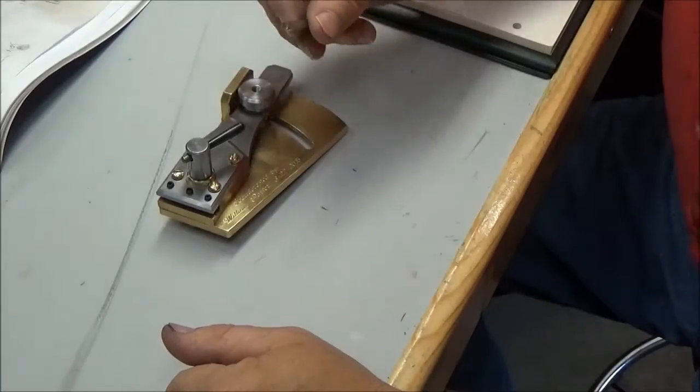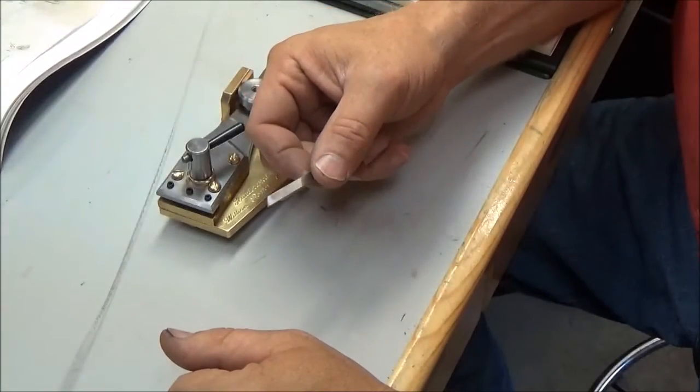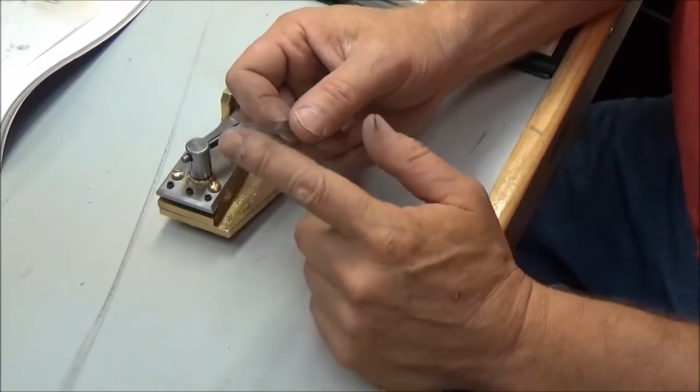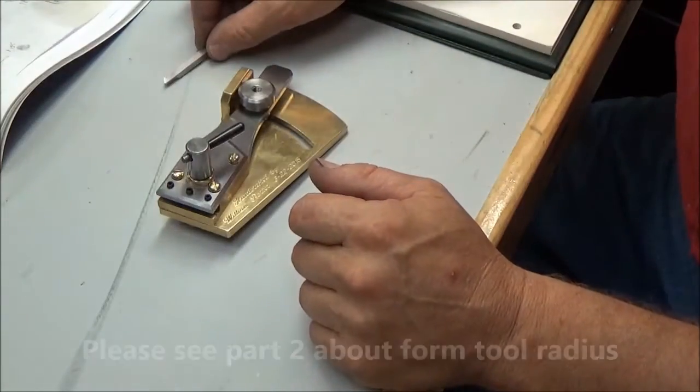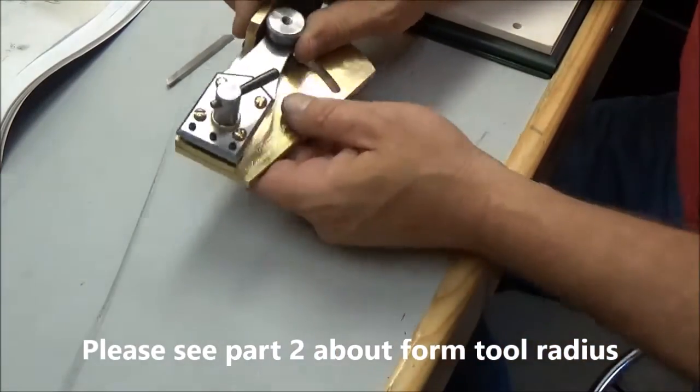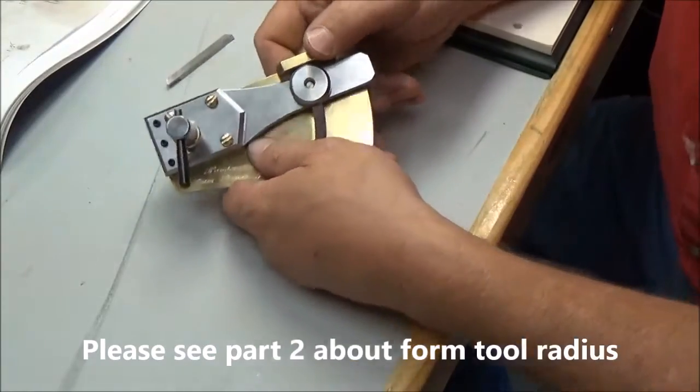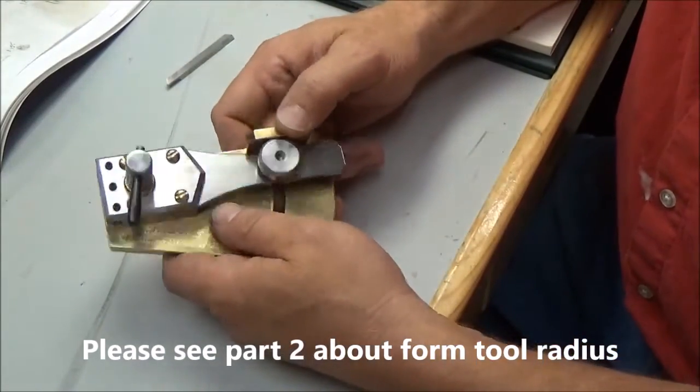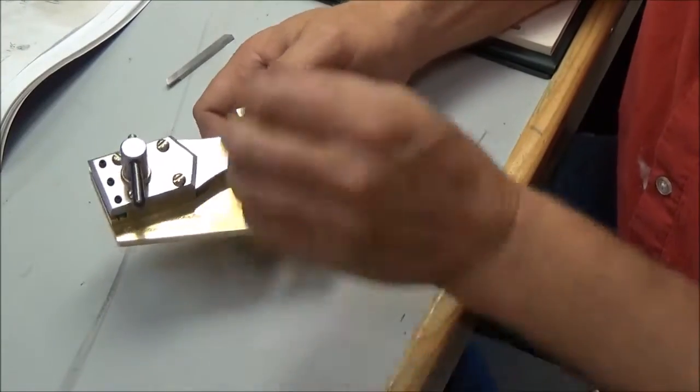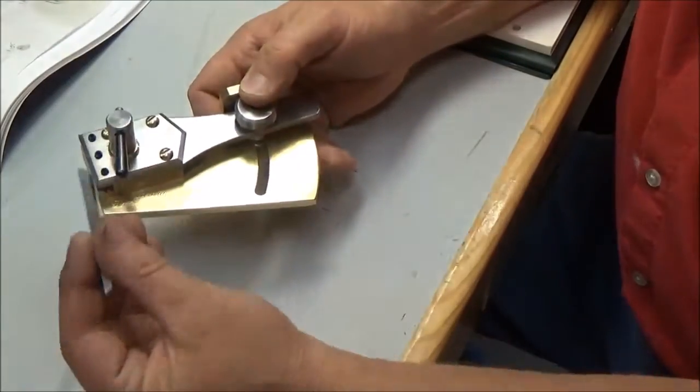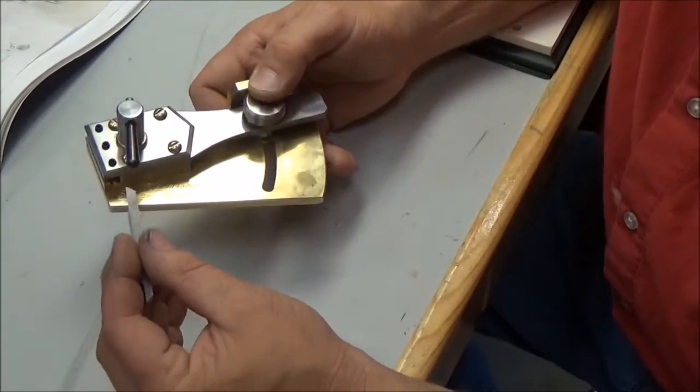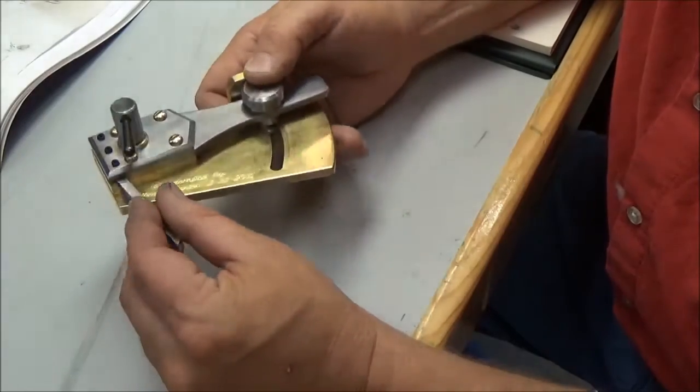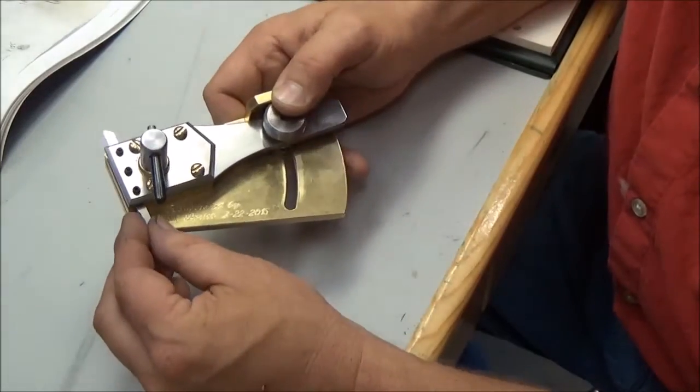Well, we have our form tool which we put the radius on last video, and basically that's going to fit into this little apparatus that I made for my lathe. This form tool will slide into here and get locked down.